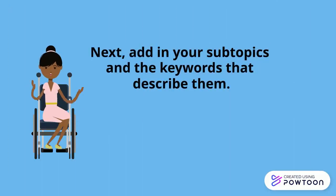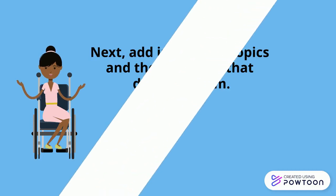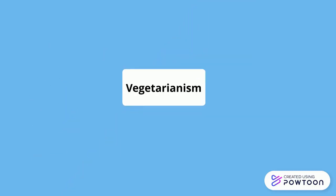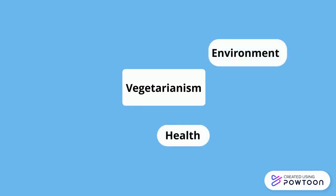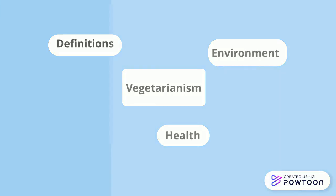Next, add in your subtopics and the keywords that describe them. For my research on vegetarianism, possible subtopics to include are the environment, health, and definitions or types of vegetarianism.